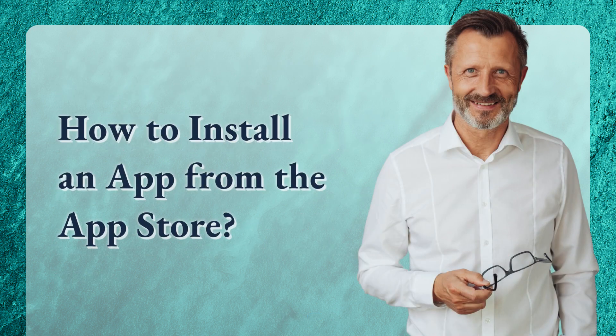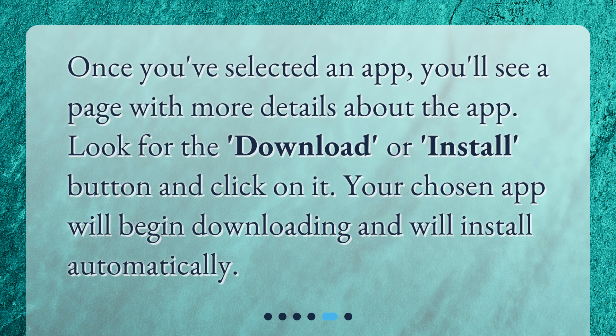How to install an app from the App Store? Once you've selected an app, you'll see a page with more details about the app. Look for the Download or Install button and click on it. Your chosen app will begin downloading and will install automatically.